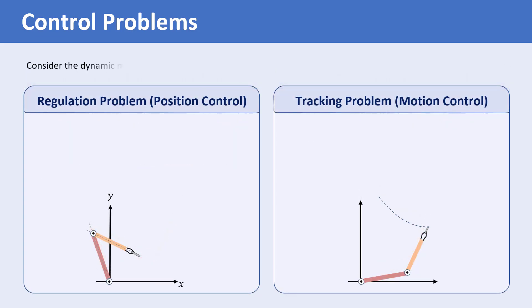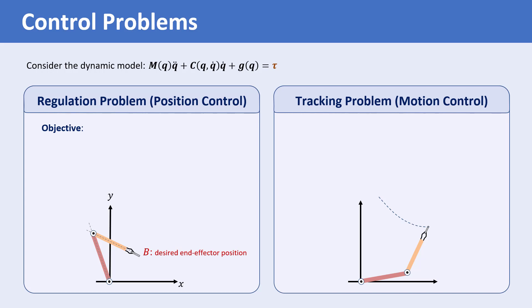Consider the dynamical model of an n degree of freedom robot manipulator, which is M Q-double-dot plus C Q-dot plus G equals tau. The objective in the regulation or position control problem is to find the vector of joint torques, tau, such that the end effector converges to the desired position B.